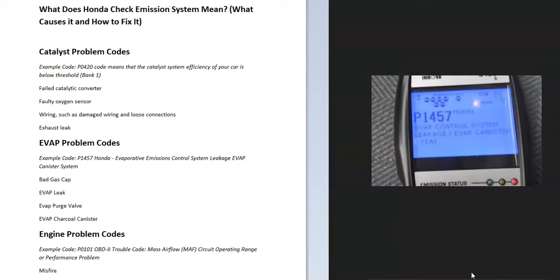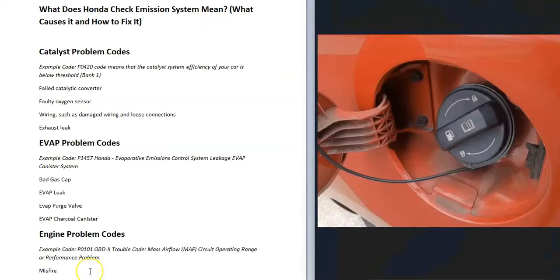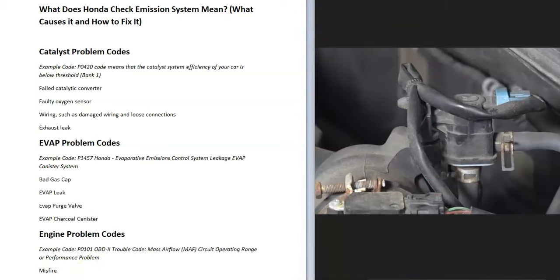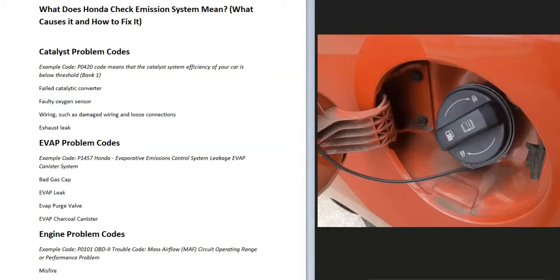Another example is a P1457 code, which is an EVAP system problem. The EVAP system takes gas vapors from the gas tank and sends them back into the engine to be burned off so they don't escape into the atmosphere. This can be caused by a bad gas cap, a bad purge valve located on top of the engine, or a charcoal canister underneath near the gas tank. If you get an EVAP code, check those components and look for any leaks.